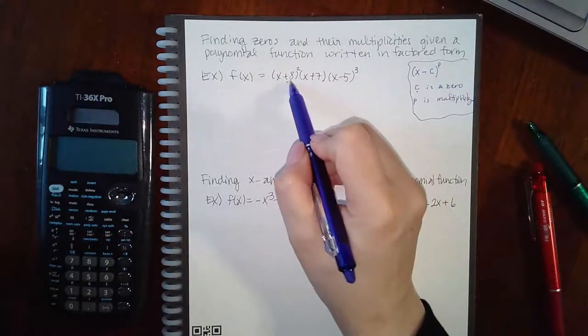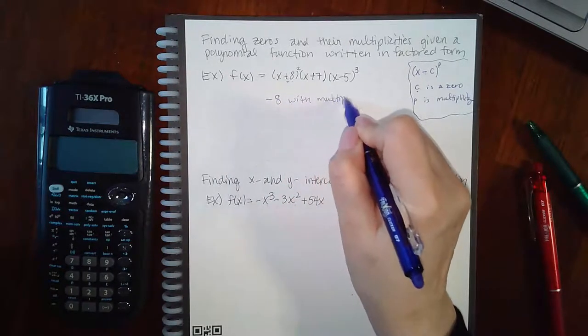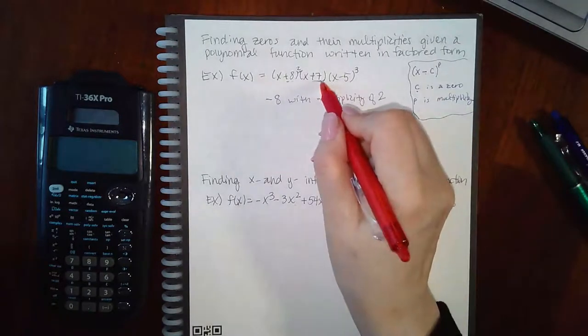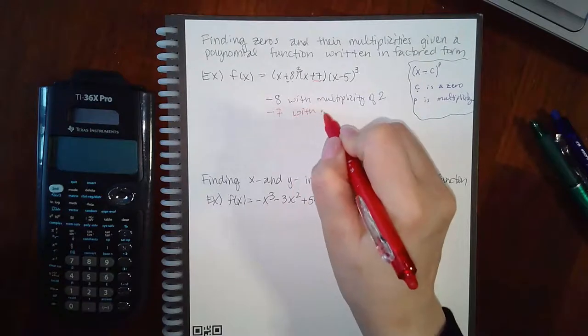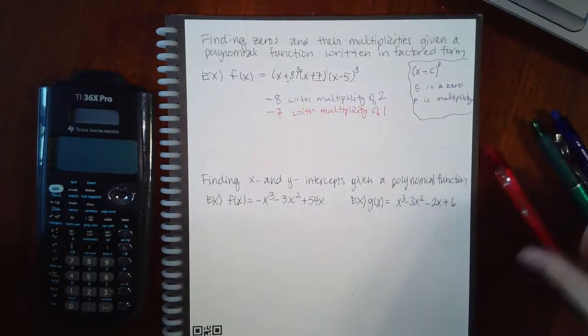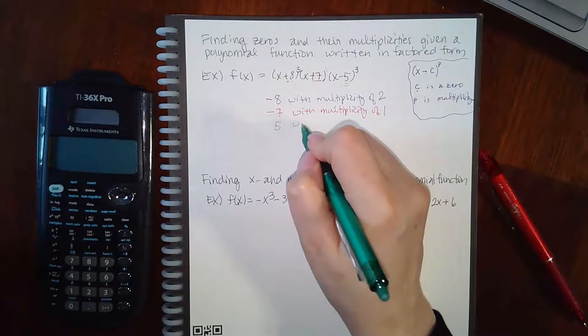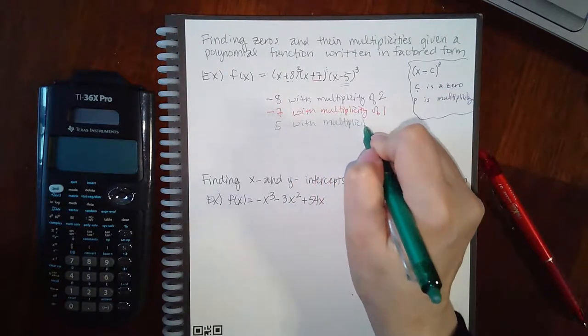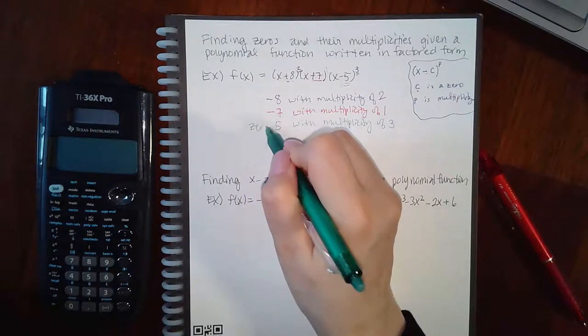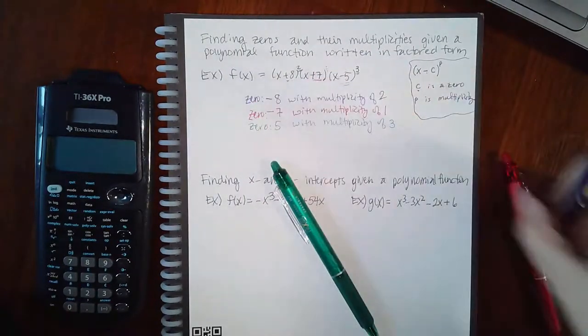For each zero, it's going to have its own multiplicity. Here, for instance, I have plus 8, which means the zero that corresponds is negative 8 with multiplicity of this exponent, which is 2. Here you have a positive 7, so the zero is negative 7 with multiplicity of, and there's no exponent there, it's automatically a 1. And then finally, the last one we have here that's a minus 5, so we're going to use positive 5 as our zero with multiplicity of this exponent, which is 3. So these are the zeros and the exponents on that factor is the multiplicity.